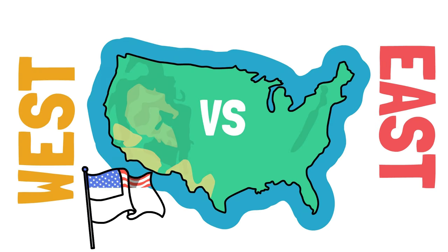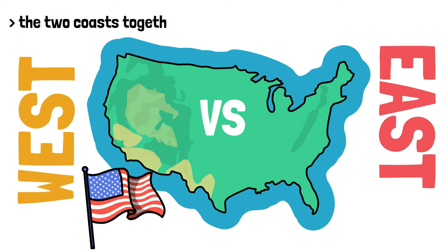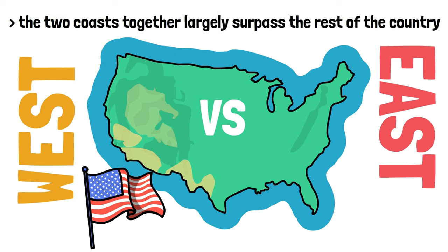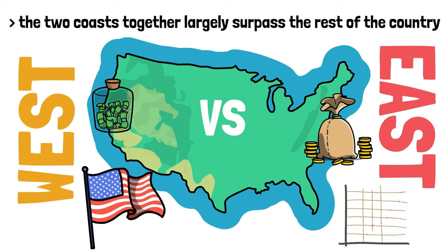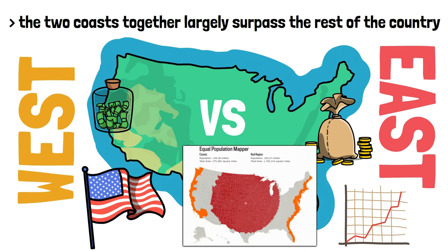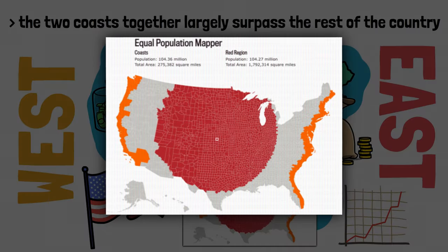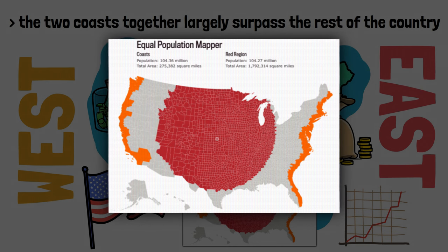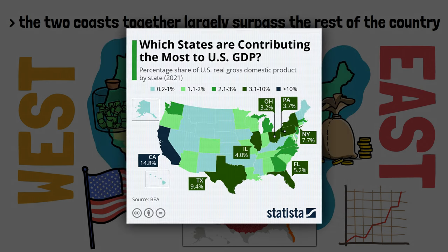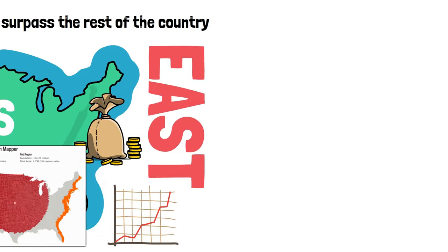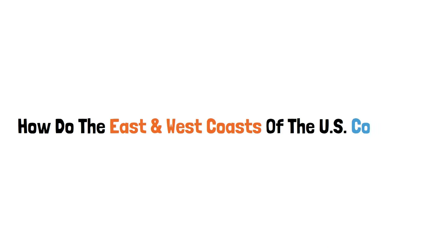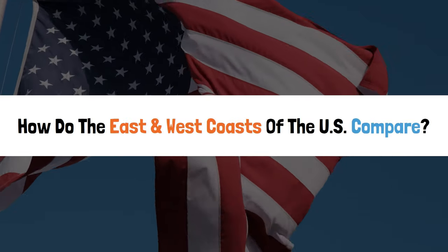First, it's important to point out that the two coasts are, together, the most developed and rich regions of the country. When you compare each or the two together with the country's interior, the numbers speak for themselves. The biggest example is population, with the vast majority living in these areas. But comparing the coasts with the interior would be a little boring because the coasts would do better in pretty much all factors, so I want to answer the question: how do the East and West coasts of the US compare?